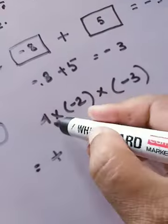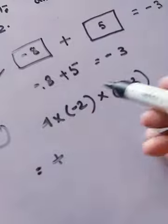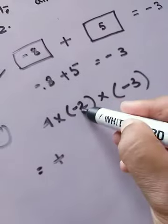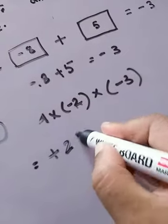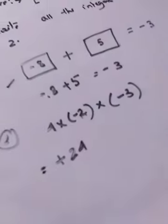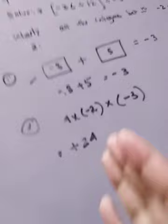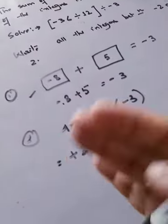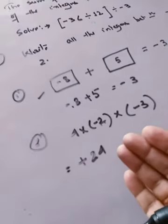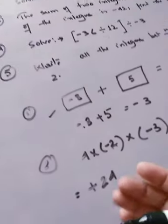Now multiply the numbers: four times two is eight, eight times three is twenty-four. So your answer is positive twenty-four. I will come up with more variations on this type of question.